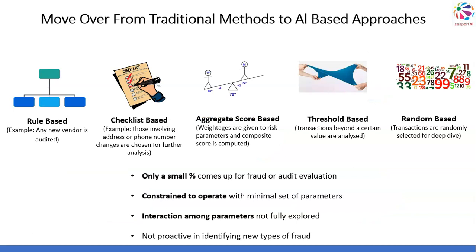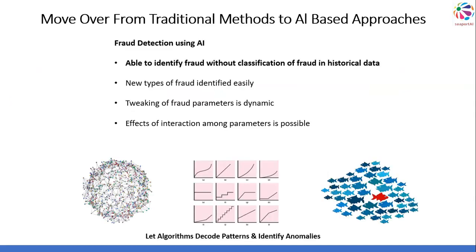When I say traditional approaches, I am referring to any one of five: rule-based, checklist-based, aggregate score-based, threshold-based, or random-based. Only a small percentage comes up for fraud review in these approaches. You're constrained to operate with a minimal set of parameters, can't really study the interaction among parameters, and you are not proactive in identifying new types of fraud. With AI, you let algorithms decode the patterns in data and identify anomalies.